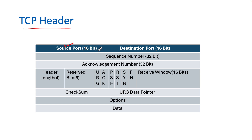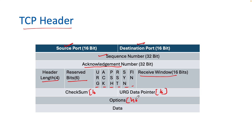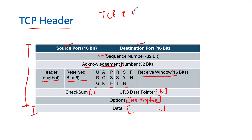The TCP header fields are: source port, destination port, sequence number, acknowledgement number, header length, reserved bits for future use, flags, receiving window size, checksum of 16 bits, urgent data pointer of 16 bits, optional fields of up to 40 bytes, and data. The header plus data together form the segment.